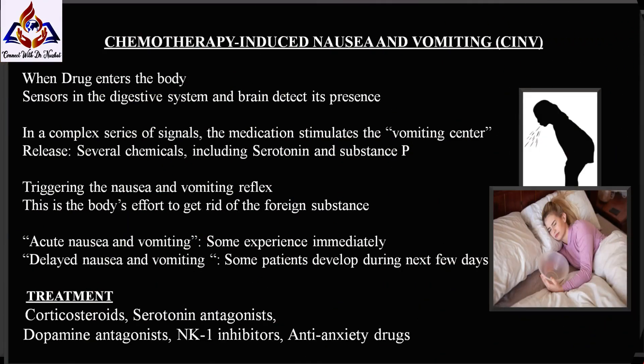Chemotherapy-induced nausea and vomiting: when chemotherapy enters the body, sensors in the digestive system and brain detect its presence as a foreign substance. In a complex series of signals among the brain, mouth, stomach, small intestine, and bloodstream, the medication stimulates the vomiting center in the brain. Several chemicals including serotonin and substance P are released, triggering the nausea and vomiting reflex.